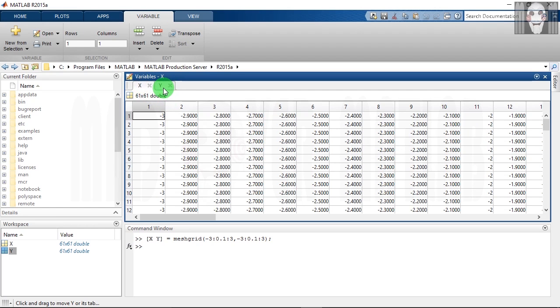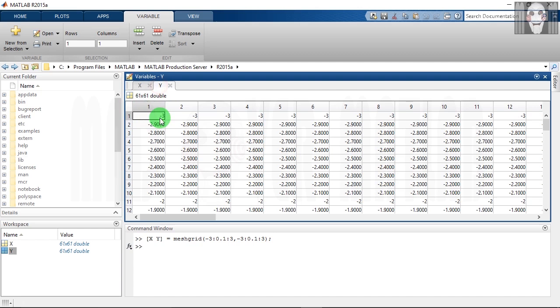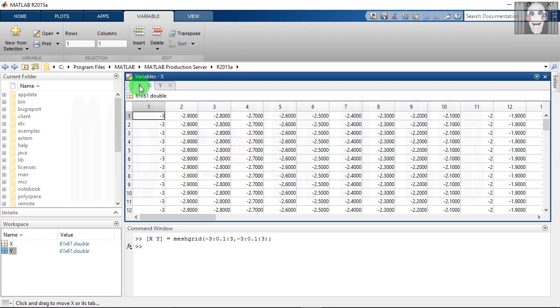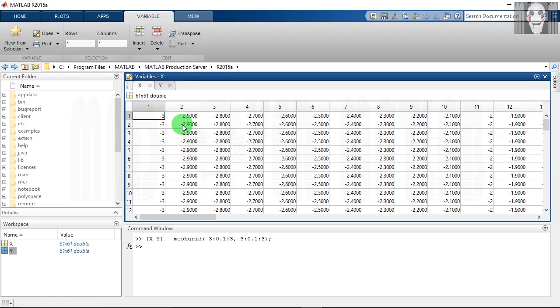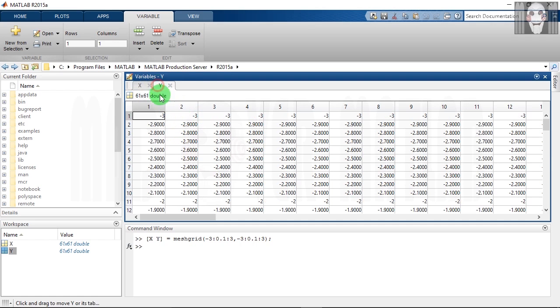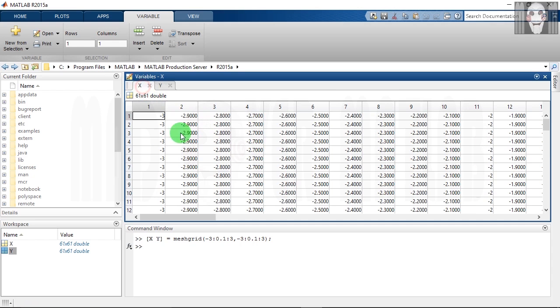When you combine these two arrays, if you combine each and every element of X corresponding to each and every element of Y, for example, if you combine element 1 of X with element 1 of Y, you will get a point. So the first point that you will get is (-3, -3), after that you will get a point (-2.9, -3), then you will get a point (-2.8, -3).